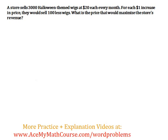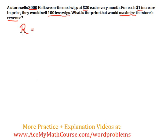Here we have a revenue word problem and we want to maximize revenue — make the most money possible using math. To do that, we're going to complete the square. Revenue is how much money the store is going to make, and we can get it by multiplying the price by the quantity. So the price of each wig multiplied by the quantity of wigs will give us the total revenue.